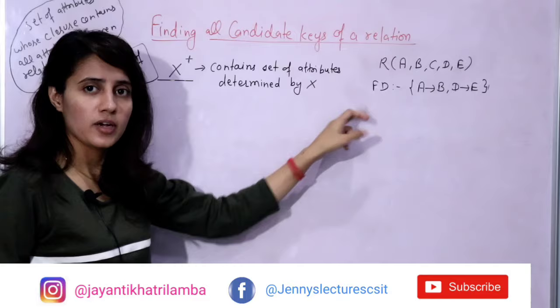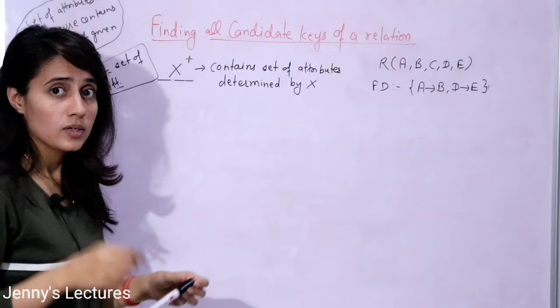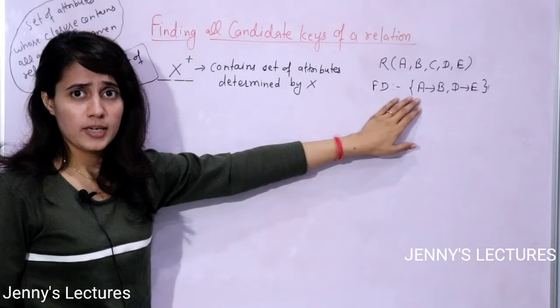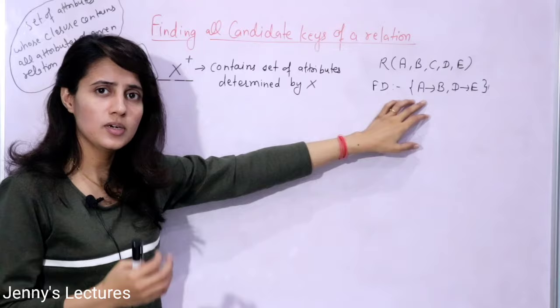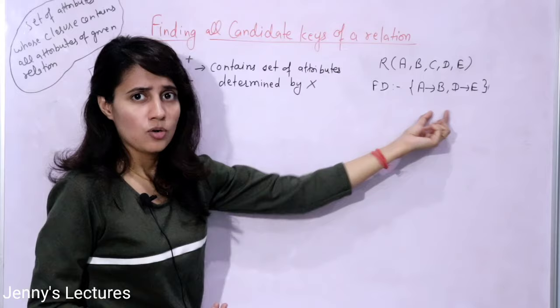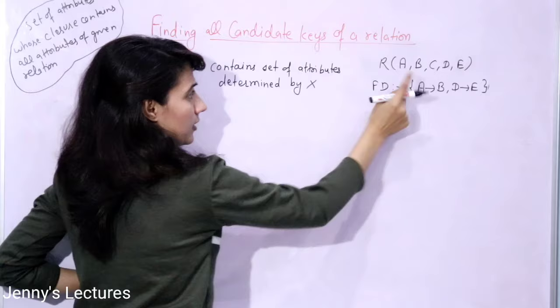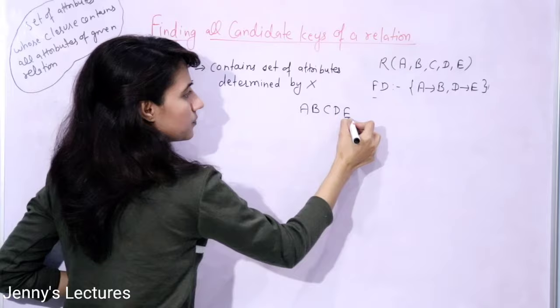Now let's take an example and find out all the candidate keys present in this relation using a simple trick. In the previous video we discussed the lengthy process. First we'll solve a simple example, then take a complex example where functional dependencies may look like AB determines C or ABC determines D.